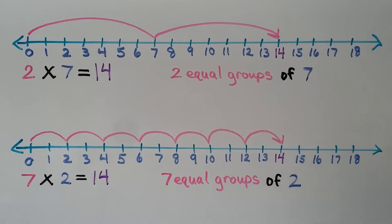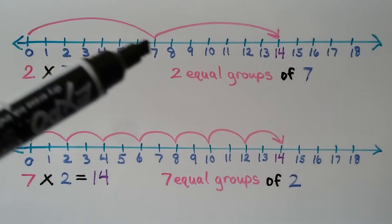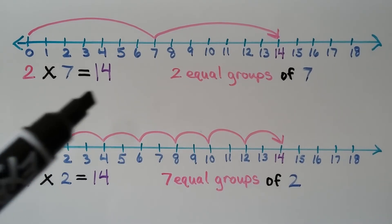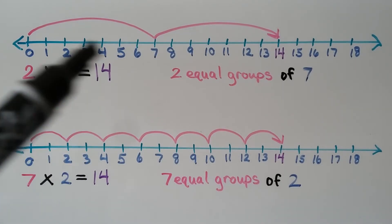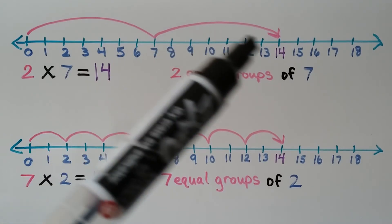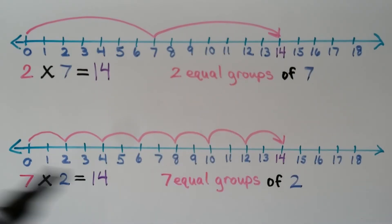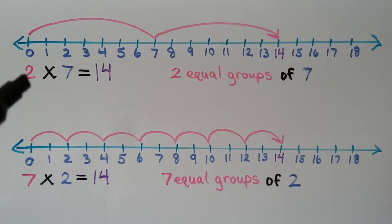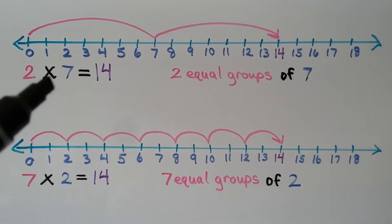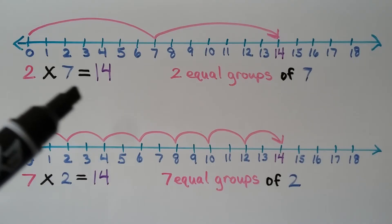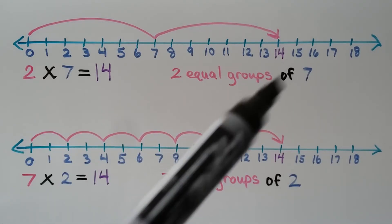This number line has two equal groups — two jumps, one and two. There are two equal groups of seven. The first jump goes to seven, the second jump goes to fourteen. Our number sentence is two, for two jumps, times seven — that's how many numbers we jumped — is equal to fourteen.